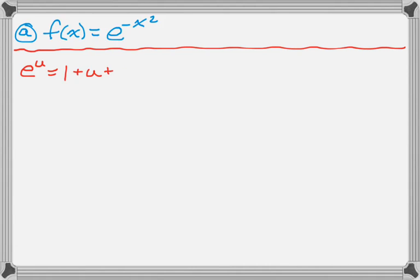There's a couple that you need to have memorized. You need e to the x, you need sine of x, cosine of x, 1 over 1 minus x. Those are the ones you have to walk in with memorized or you're going to be in some trouble.